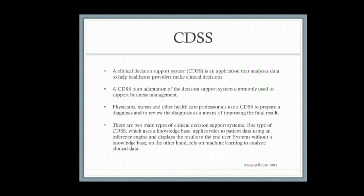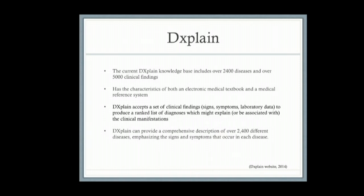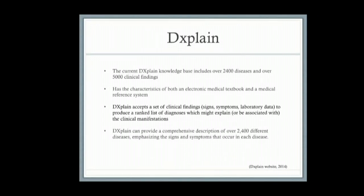DXplain is a CDSS that uses a knowledge base and rules. Its current knowledge base includes over 2,400 diseases and over 5,000 clinical findings. DXplain can act both as an electronic textbook and as a medical reference system. You can find descriptions of over 2,400 different diseases, and as a medical reference system, DXplain can provide up to 10 references for each of the diseases it contains.